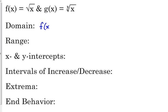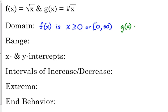So the domain of f(x) is x greater than or equal to zero, or in interval notation, a bracket with zero — because it can equal zero — to infinity with a parenthesis. Now, when we're talking about the cube root, we don't have the same issue. We can take the cube root of negative numbers because the cube root of negative 8 is negative 2, since negative 2 times negative 2 times negative 2 is negative 8. So the domain of g(x), the cube root of x, is all real numbers, or negative infinity to infinity.